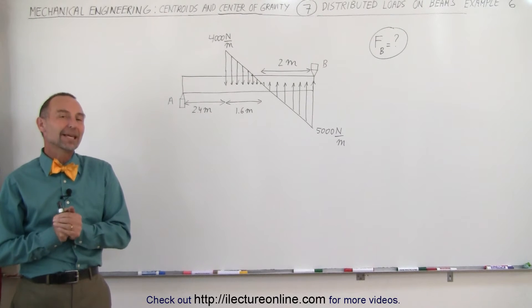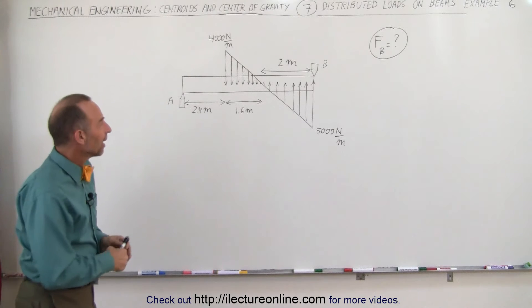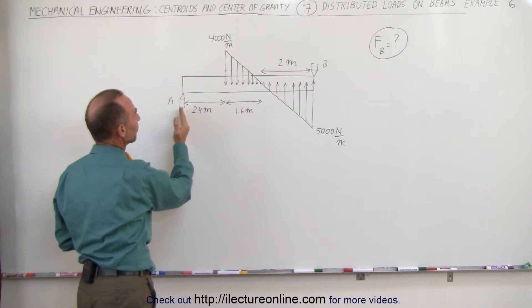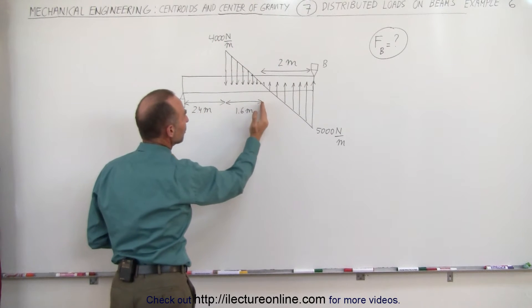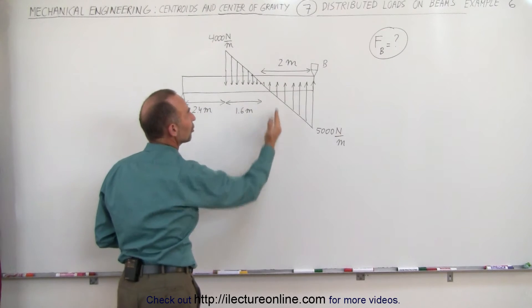Welcome to ElectronLine. Here we have a very interesting example of a distributed load on a beam. On the left side of the beam there's no load at all. Then at 2.4 meters away from point A we have a load pushing down all the way out to about 4 meters from point A.